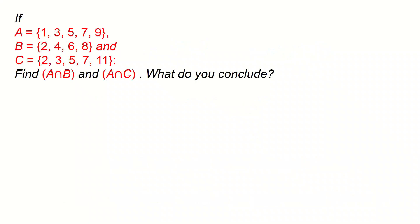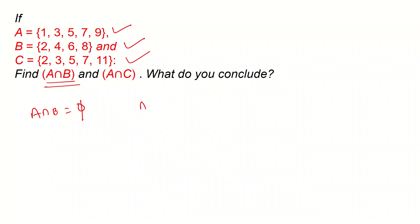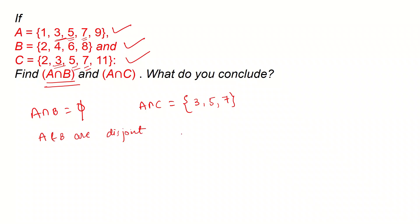Let's take an example with three sets A, B, and C. We need to find A intersection B — the common elements in A and B. A = {1, 3, 5, 7, 9} and B = {2, 4, 6, 8}, so there are no common elements — A intersection B is the null set. Now A intersection C: 3 is common to both, 5 is common, and 7 is common. So A and B are disjoint sets, whereas A and C are intersecting sets.